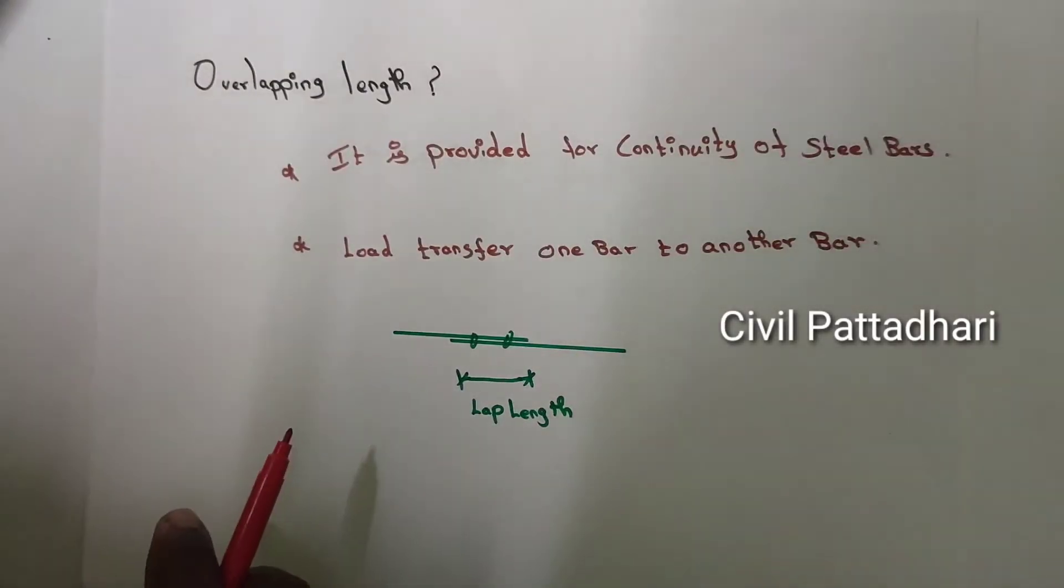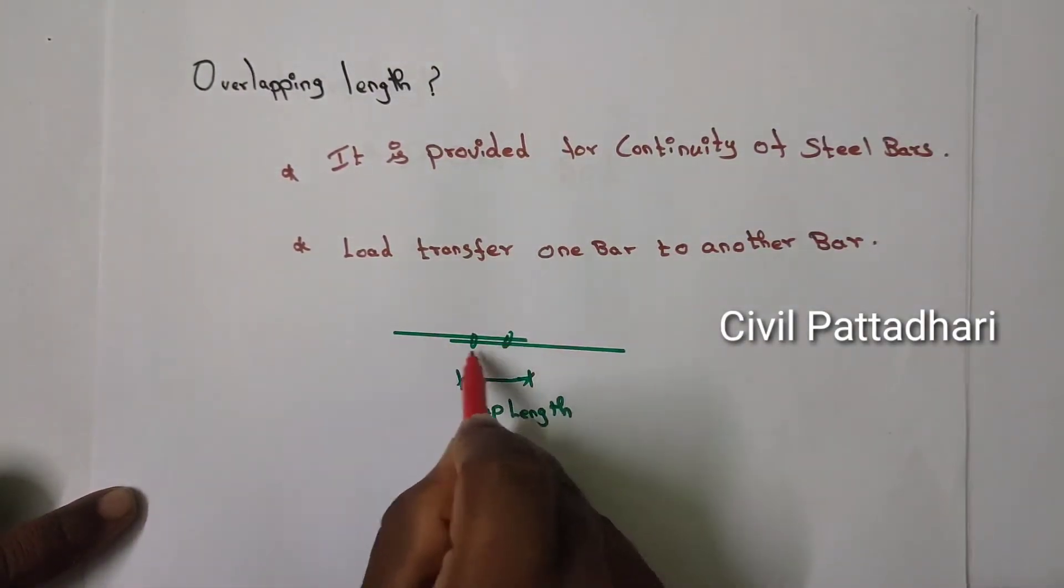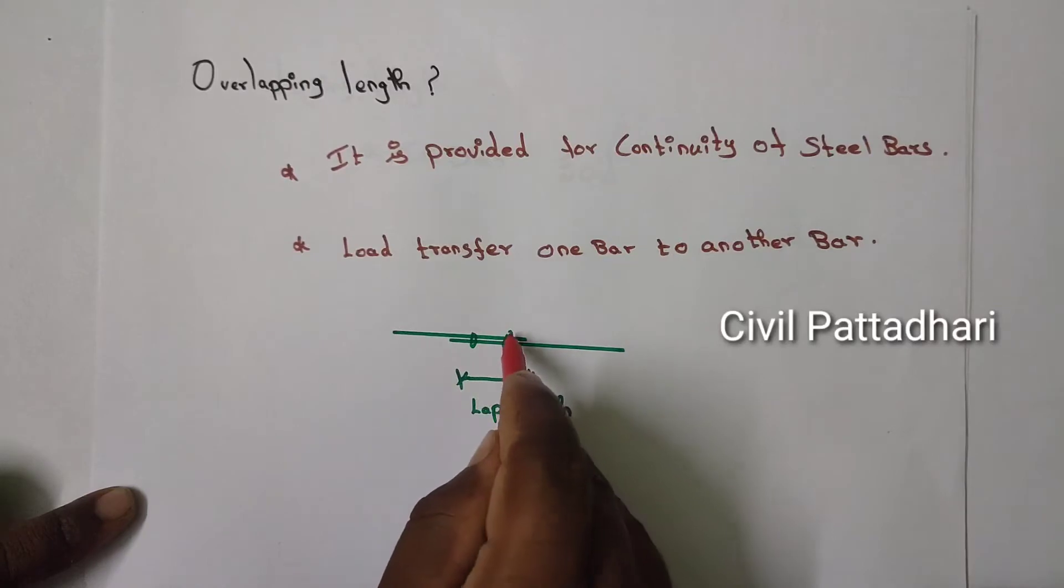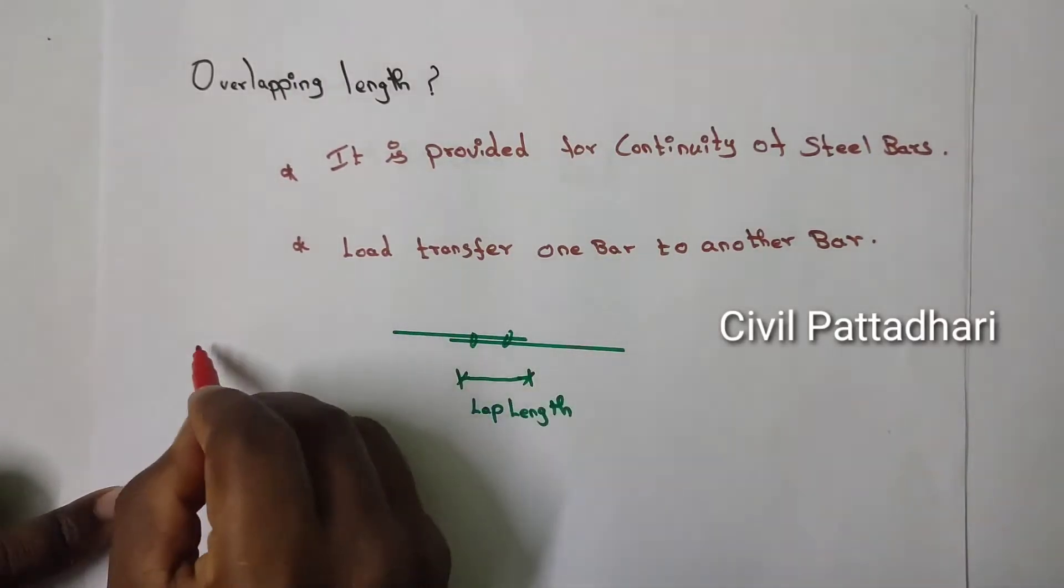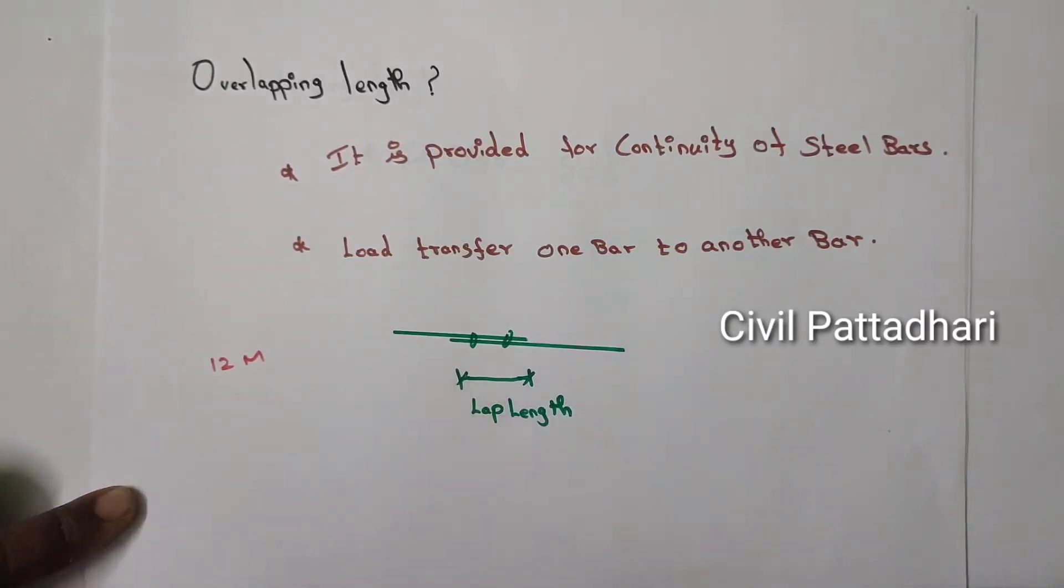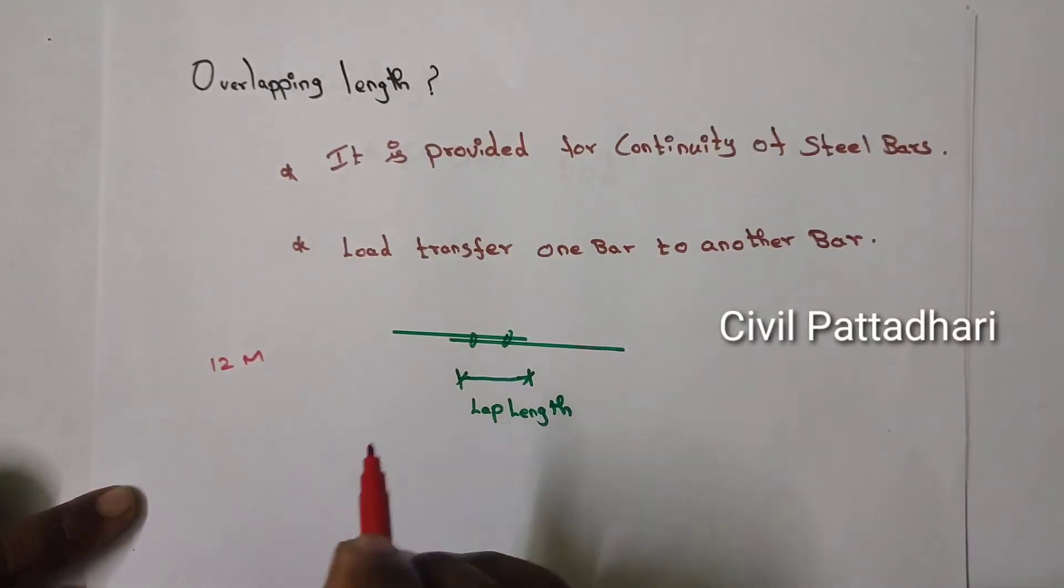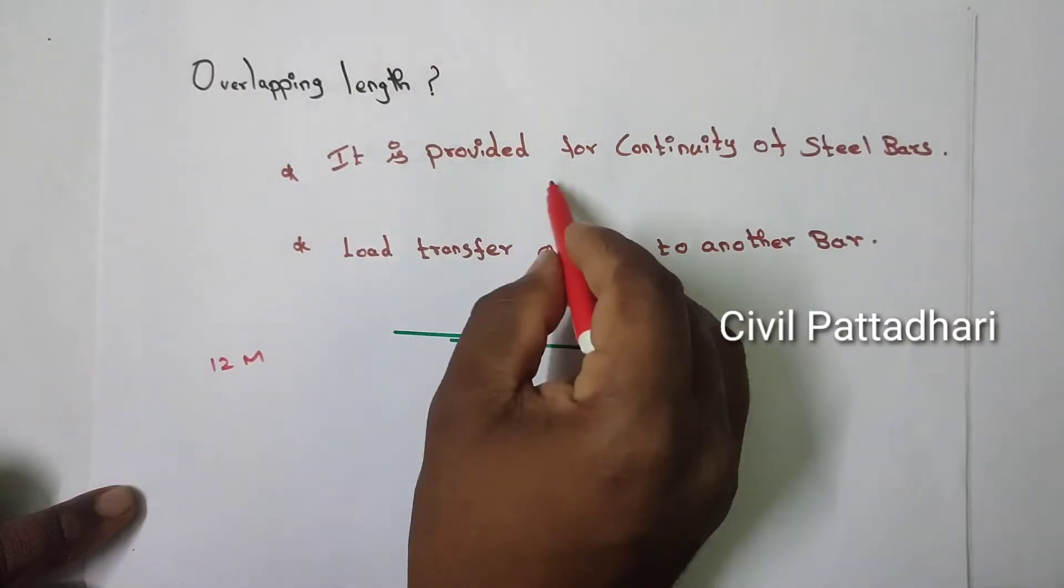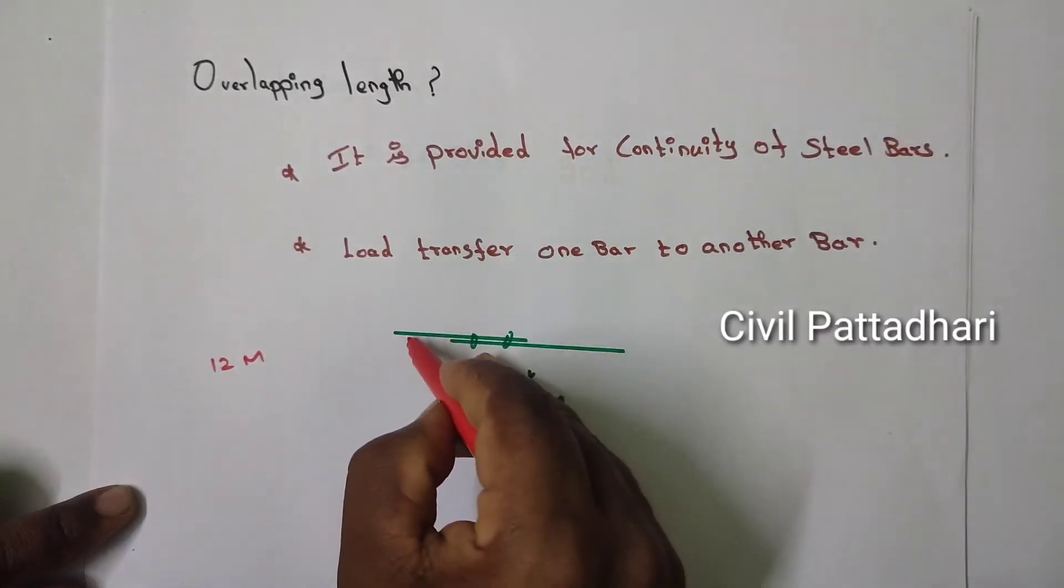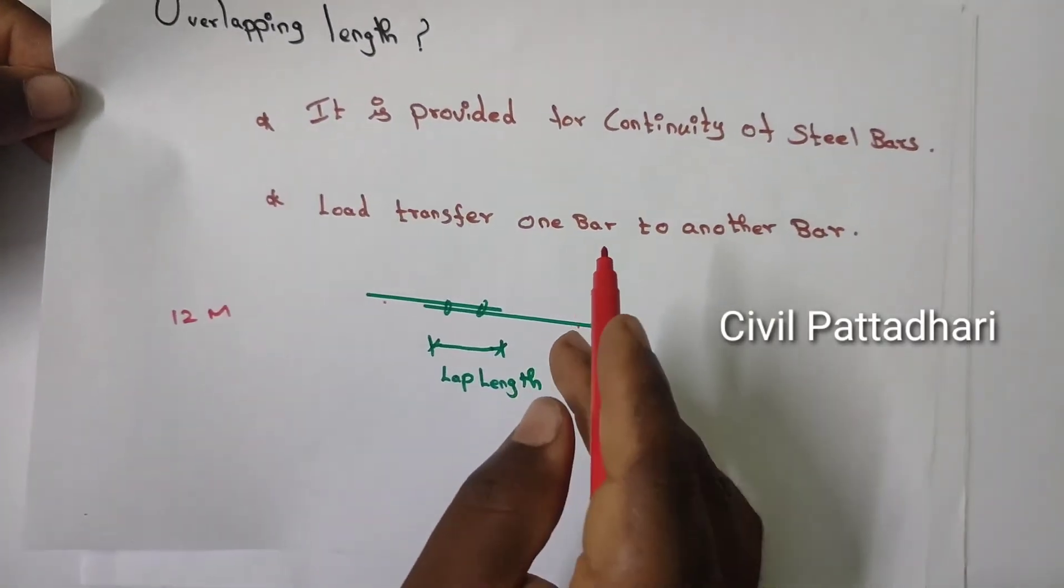First, what we have to do is know what is overlapping. The overlapping is simple: the two steel bars of any sizes are lapped together for the continuity of the bars. Because the steel bar market availability is 12 meters, the beam or column over 12 meters can be lapped by this lapping form. The lapping is provided for the continuity of the steel bar, and the load transferred from one bar to another is carried out only in the case of lapping.